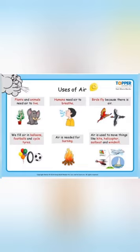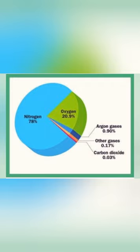Now here you can see the image of the composition of air. Air comprises of different gases — the blue portion is 78% which contains nitrogen, the green one is oxygen which contains approximately 21%, and the rest includes carbon dioxide and other gases. Nitrogen is the most abundant; it is also helpful for the growth of plants and is added to the soil by way of fertilizers. Oxygen is important for breathing, and carbon dioxide is important for plants to prepare their food in the presence of sunlight and water. All three gases — nitrogen, oxygen, and carbon dioxide — are very important for us.